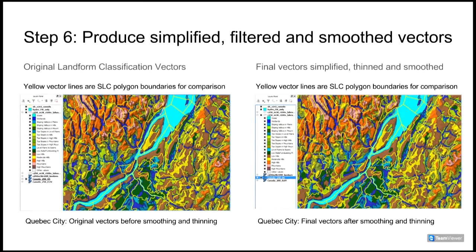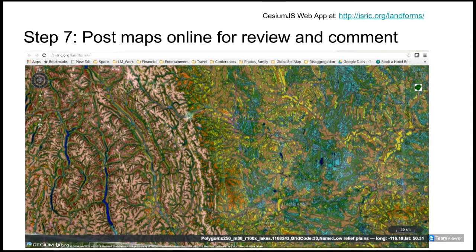In Step 7, we posted vector and raster maps of the new classification along with a number of raster images to act as reference or base layers to an online platform where they can easily be accessed, reviewed and evaluated.